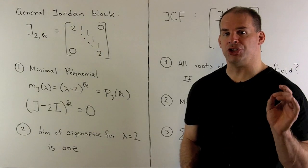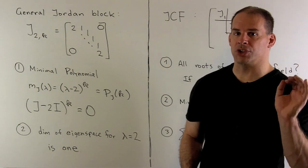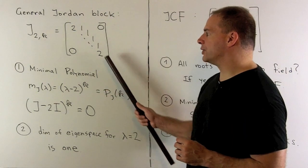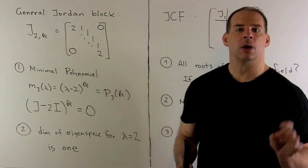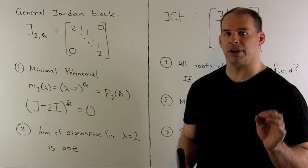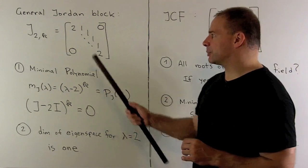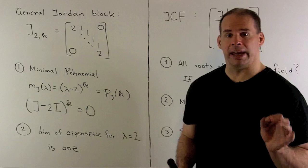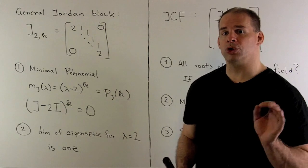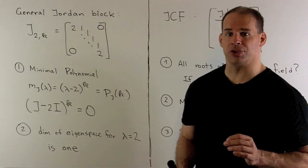From there we have the general Jordan block. We'll have a square matrix, eigenvalues down the main diagonal, ones above the main diagonal, and zeros everywhere else. If you note, if I subtract off the eigenvalues from the main diagonal, we have a nilpotent Jordan block, and then our previous two results apply.